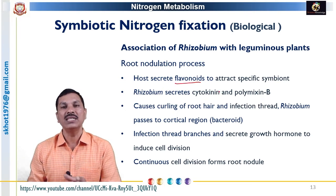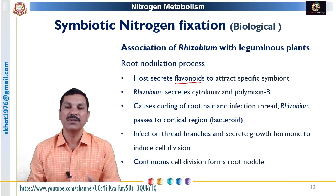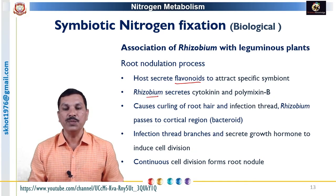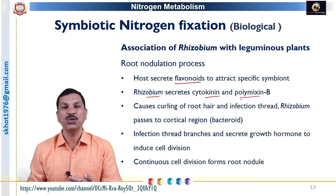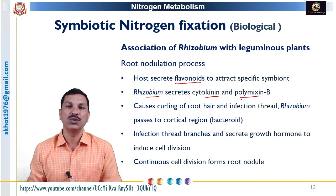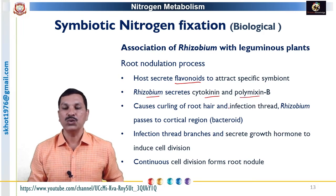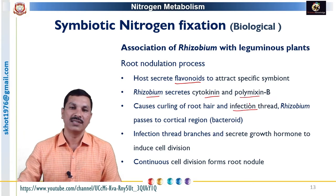The host plants, specifically the leguminous plants, have root systems that secrete flavonoids. These flavonoids attract specific Rhizobium towards themselves. The Rhizobium secretes cytokinin, the growth regulator, and polymixin B, which help to form an association with the root nodule. Once the association is produced, there is formation of an infection thread.